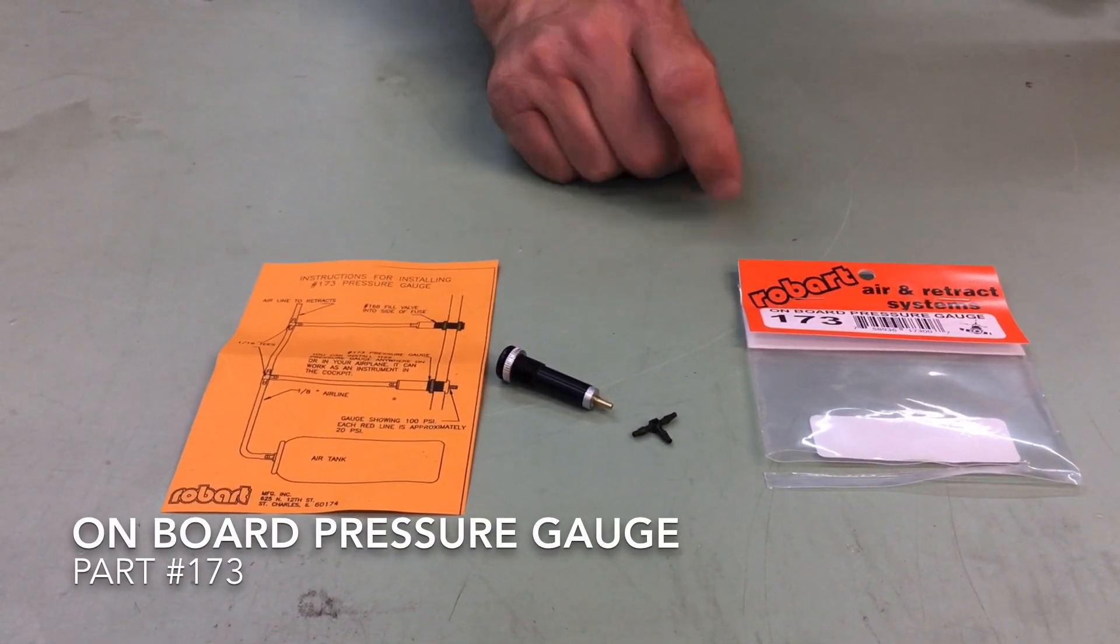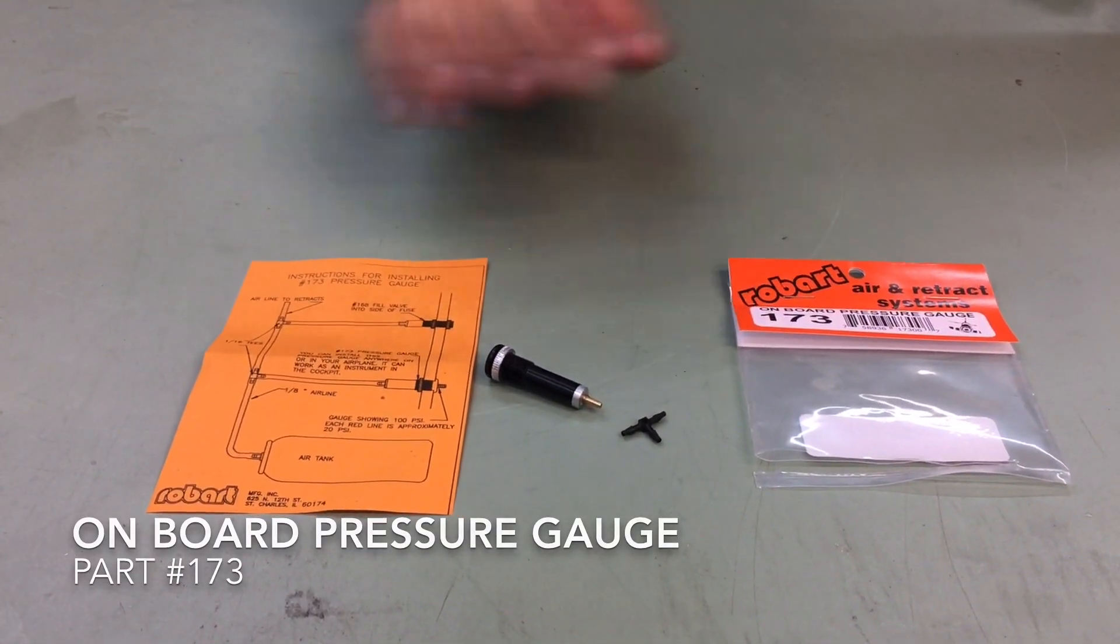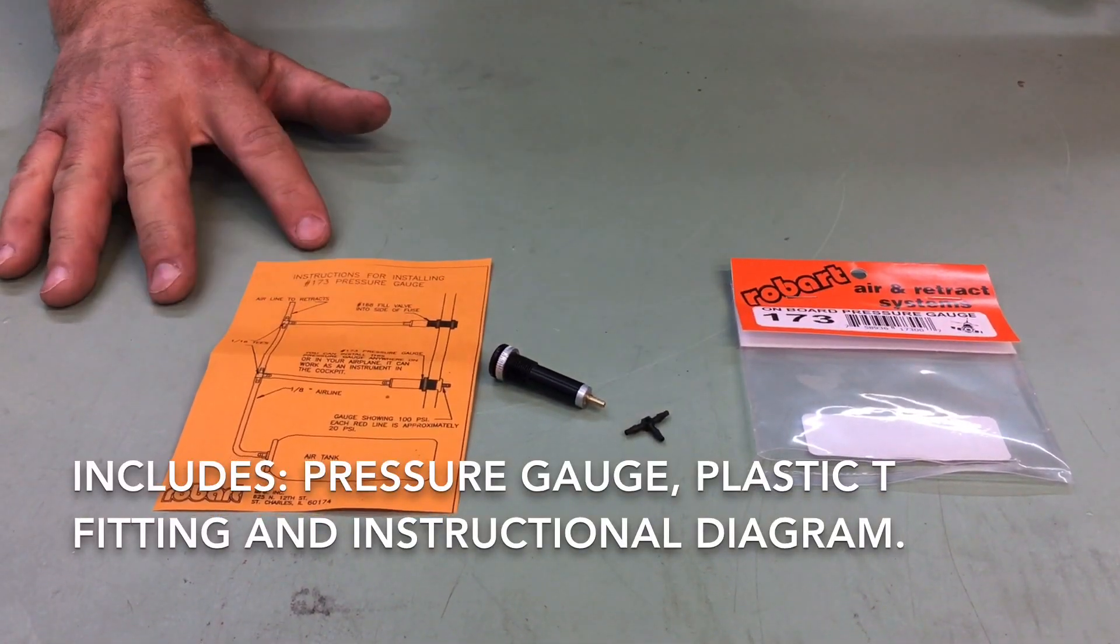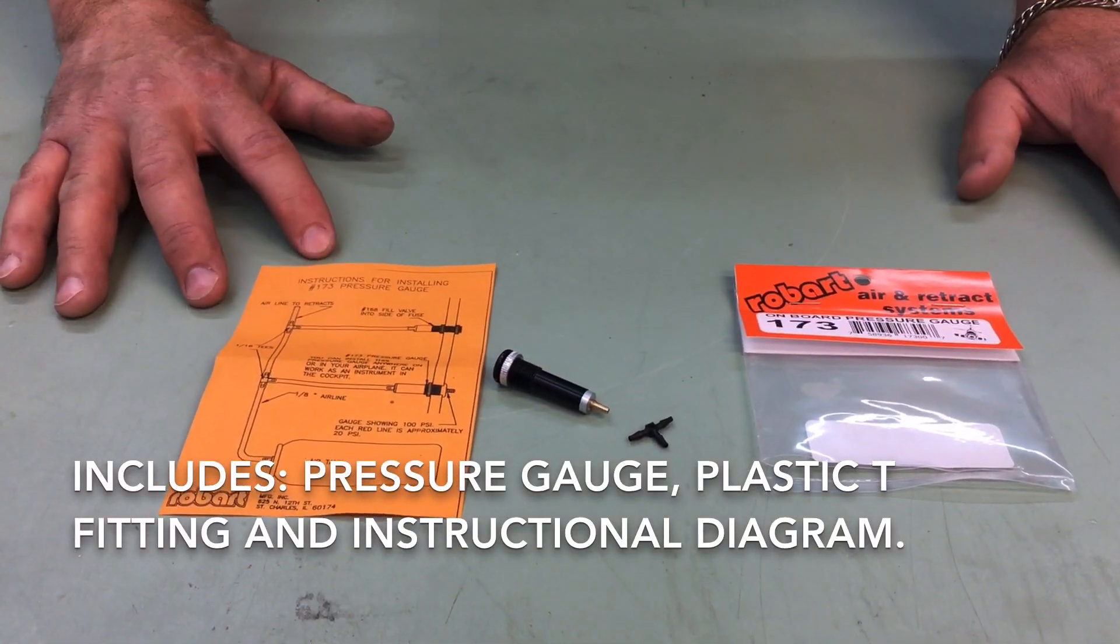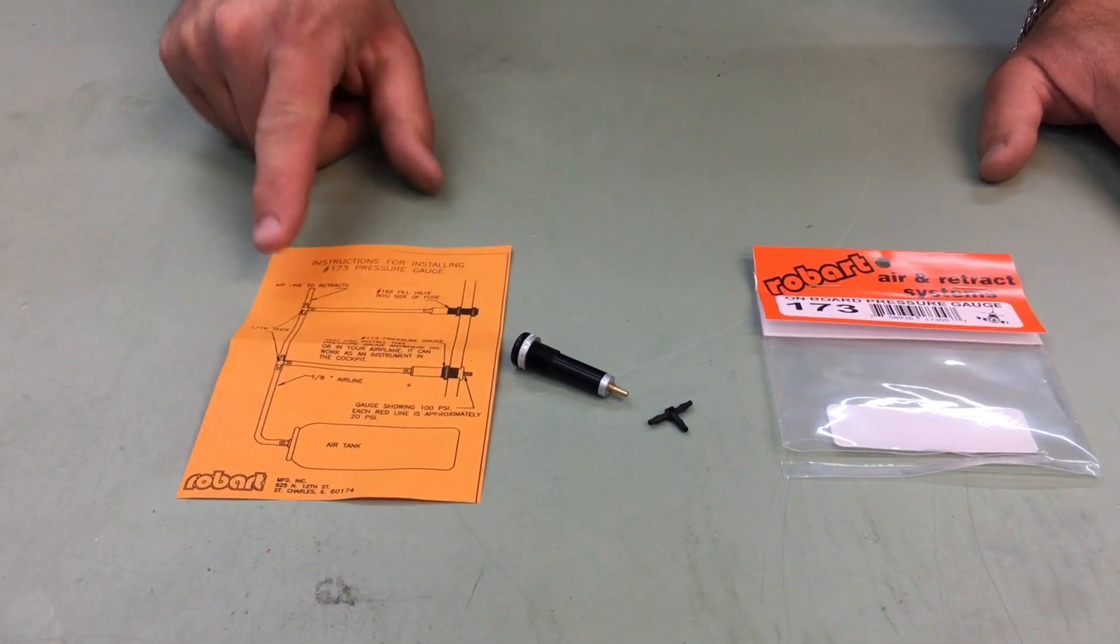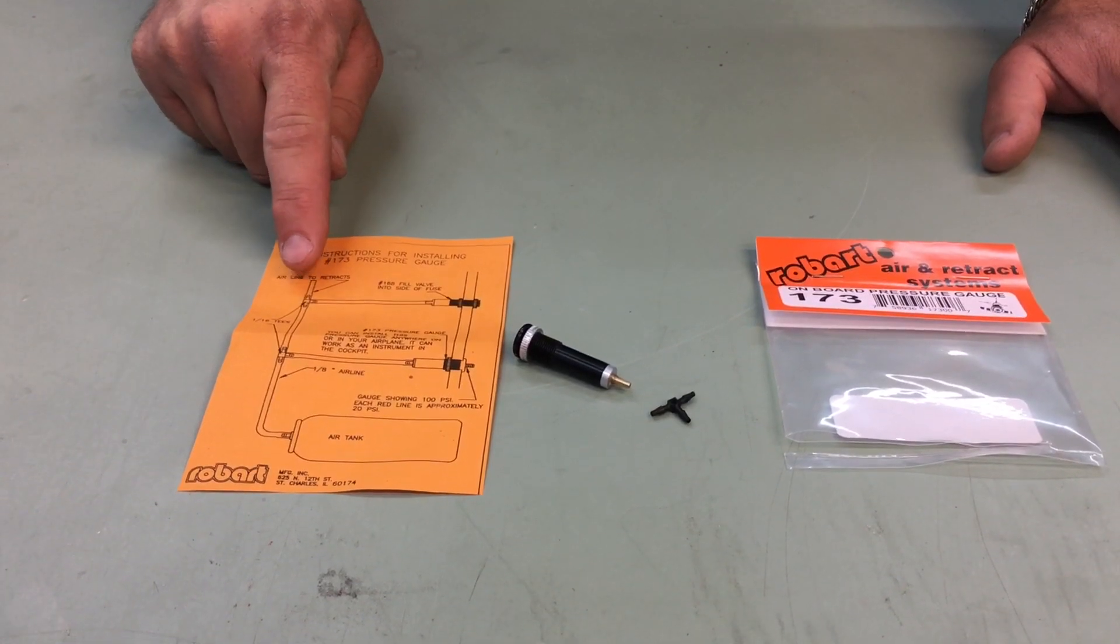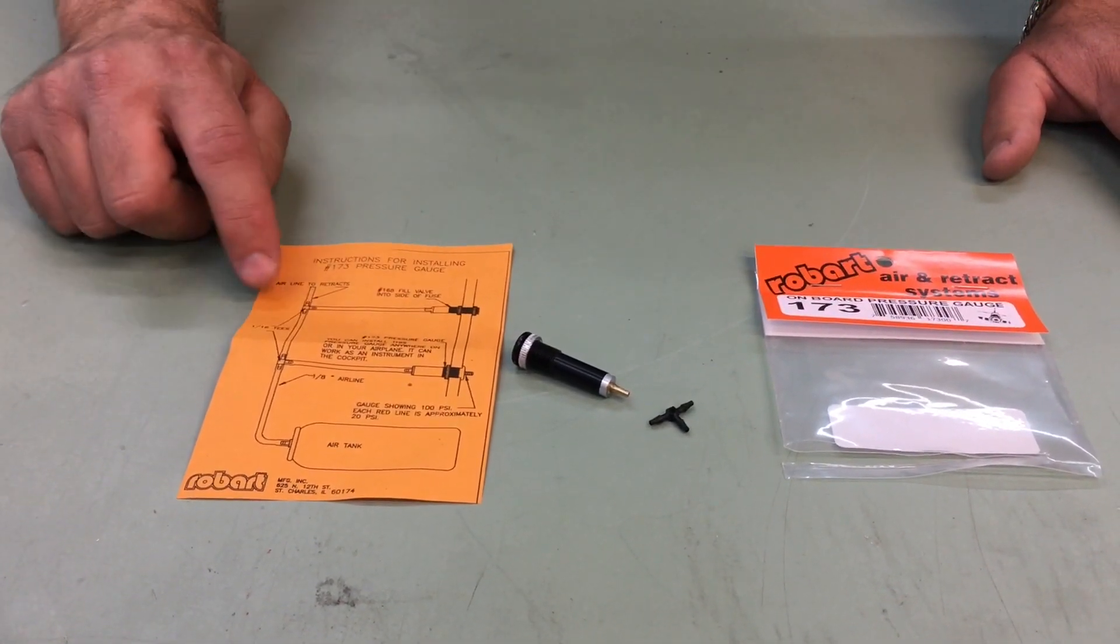So what we have here is part number 173, the onboard pressure gauge. The onboard pressure gauge will come with the pressure gauge, a T, and the instructional diagram. The instructional diagram shows how the setup works. You have your air coming in through the fill valve to a T, and then it would come up to the retracts this way.